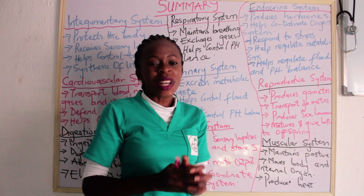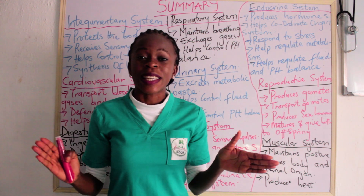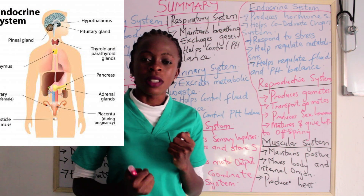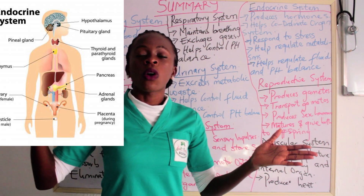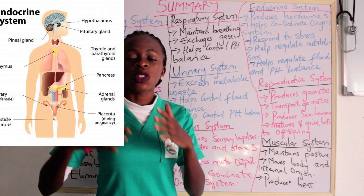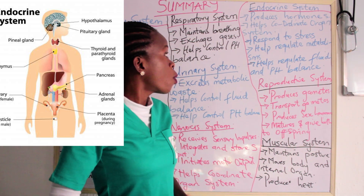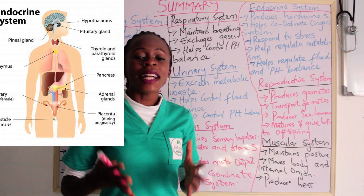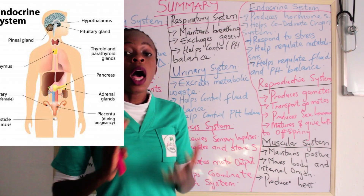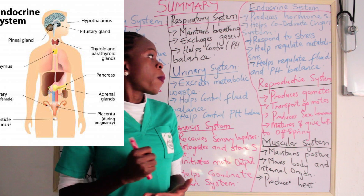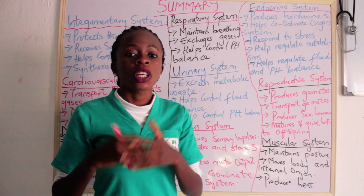The endocrine system — whenever you hear 'endocrine,' think hormones. It includes your pituitary gland, thyroid gland, and others. The endocrine system helps to produce hormones, coordinate organ systems, help us respond to stress, regulate metabolism, and also regulate fluid and pH balance.